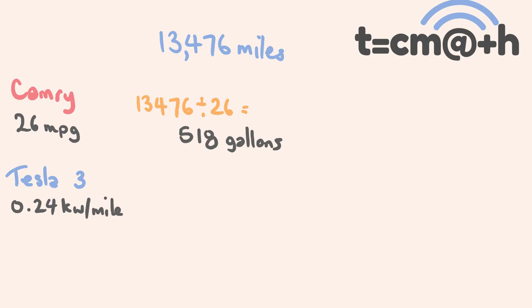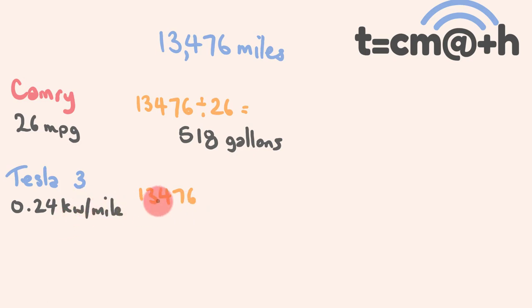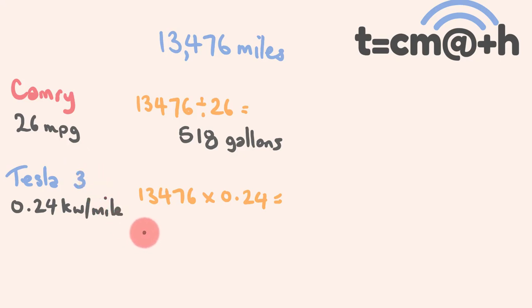What about the Tesla? We're using 0.24 kilowatts for every mile, and we know how many miles we've got. So we go 13,476 multiplied by 0.24 kilowatts, and that tells us how much electricity we're using. That gives us 3,234 kilowatts.